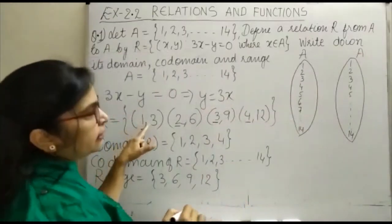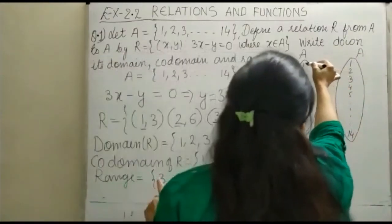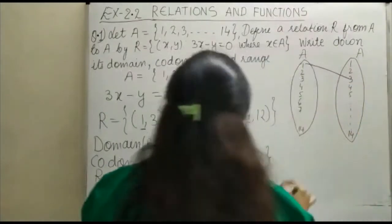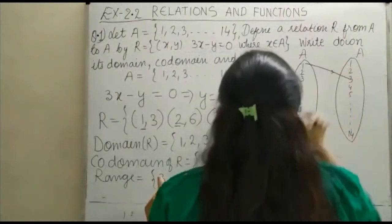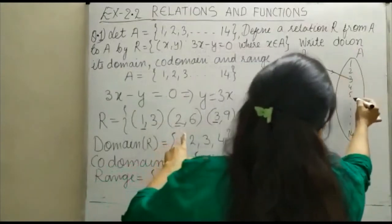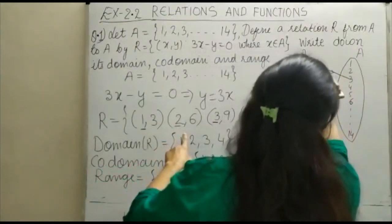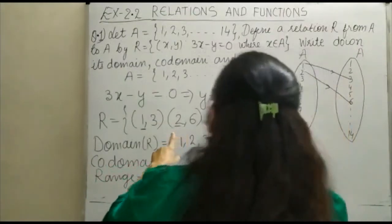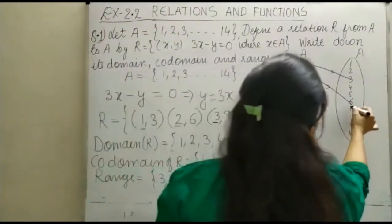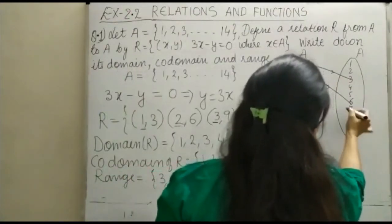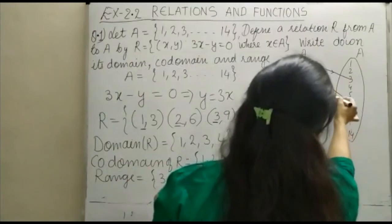आपका 1 किसे relate है, 3. You can put one arrow mark, 1 is with 3. What about 2? 2 with 6, you can write here 6, that is 2 with 6. 3 with 9. 3 with 9.